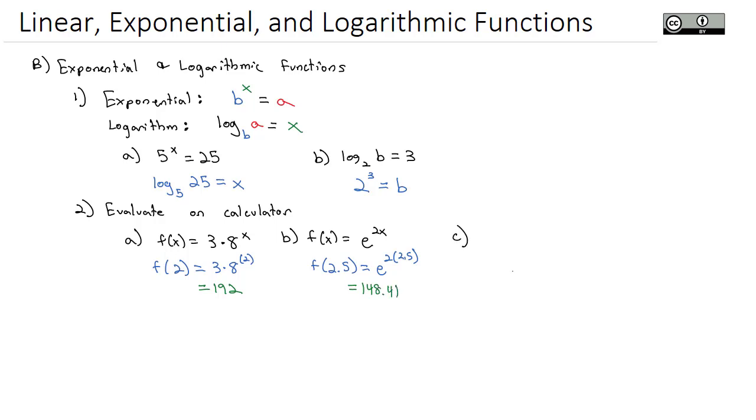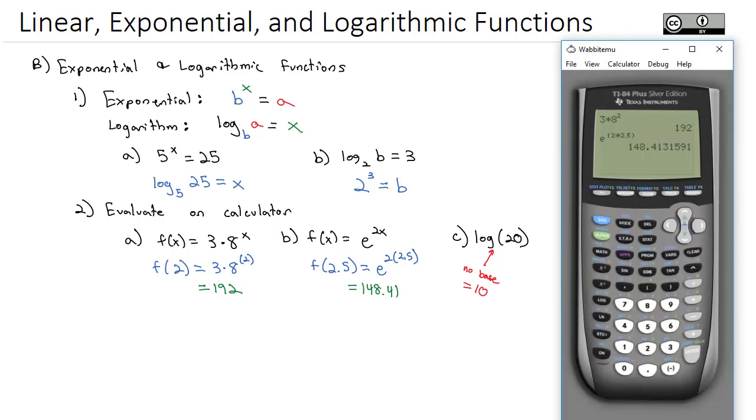There's two types of logarithms we can do on our calculator. One is a base 10, and one is a base e. If I see the expression the log of 20 with no base written, that tells me the base is actually equal to 10. And you notice on your calculator, there is a log button with no base written. Then if I type in the 20 and hit enter, we end up with 1.30.